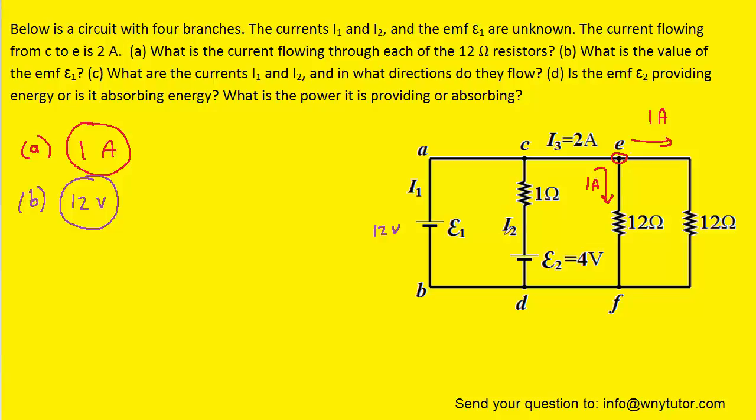Now, to determine the current I2, it will be helpful to first draw in the current. We can choose to draw the current either upward or downward. The choice is ours, and if we make the wrong choice, we can always fix it later. So for now, let's just assume that the current I2 is flowing upward. We can then apply the loop rule one more time to determine the value of I2.